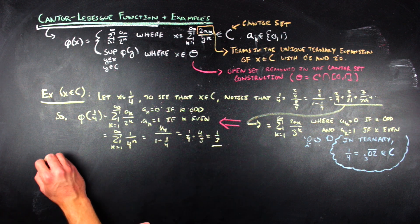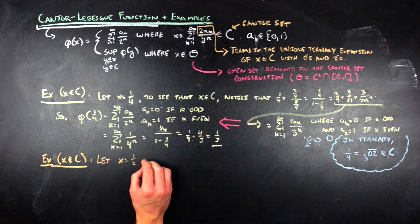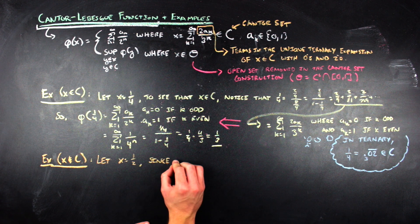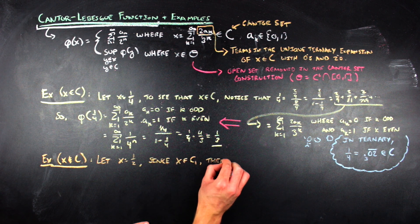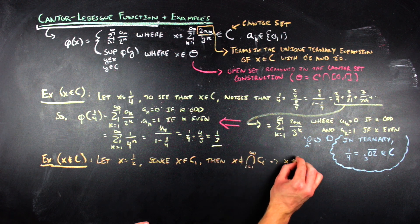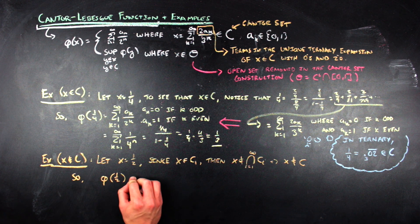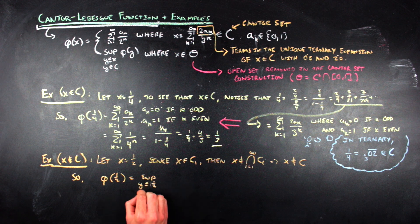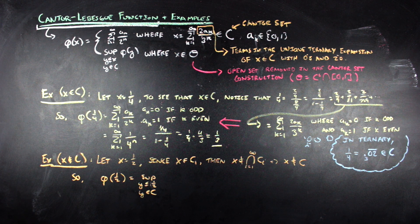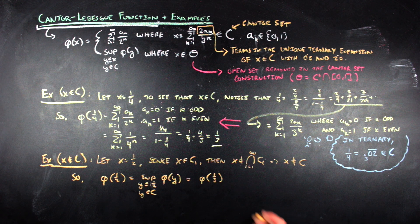For another example, let's look at something that's not in the Cantor set. If we take x equals 1/2, then x is not in the Cantor set since the point 1/2 is removed in the first step of the Cantor set construction. So when we apply phi to 1/2, we have to take the supremum of phi of y over all y in the Cantor set that are less than or equal to 1/2. That supremum will be phi of 1/3, since the Cantor-Lebesgue function is an increasing function.